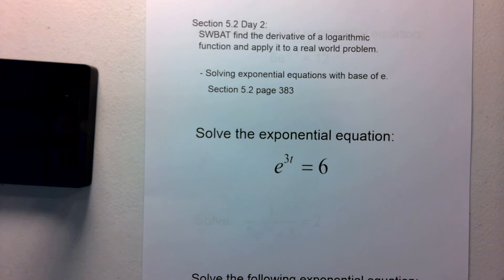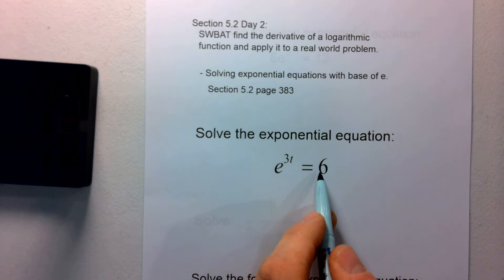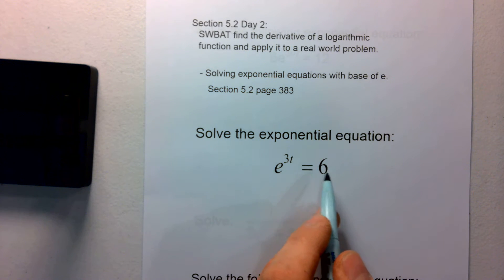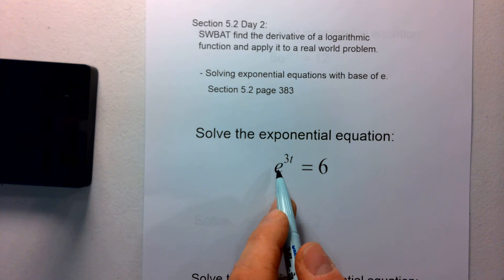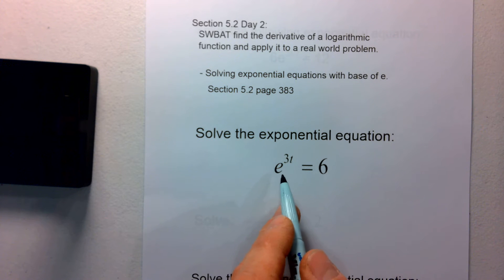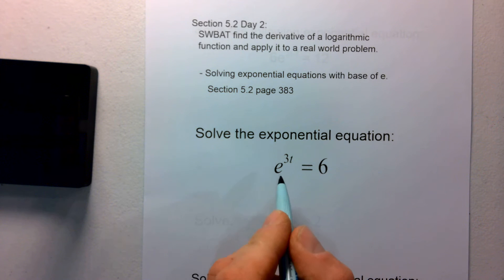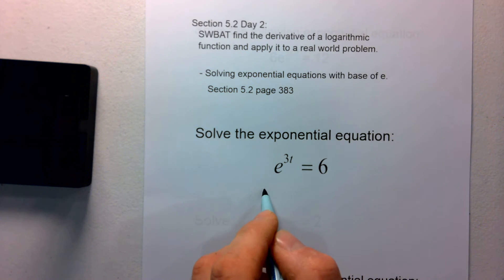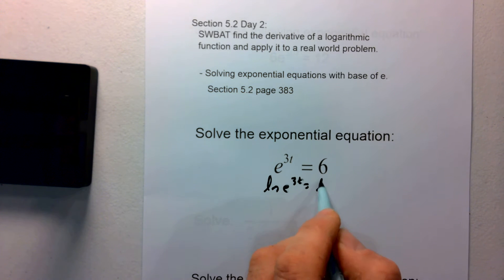I give you the example of e to the 3t equals 6, and what we're going to do is solve for the variable t. Remember that e is a number, not a variable, so our variable in this case is t. In order to take that t out of the exponent, we can take the natural log of both sides of our equation.